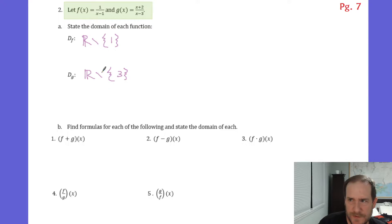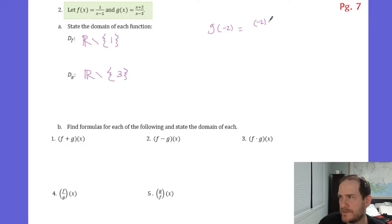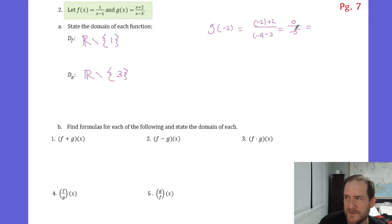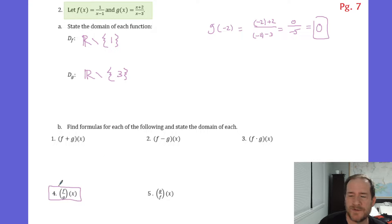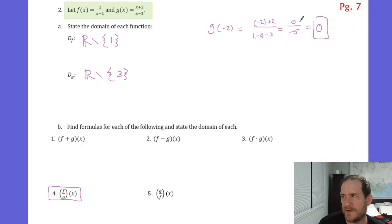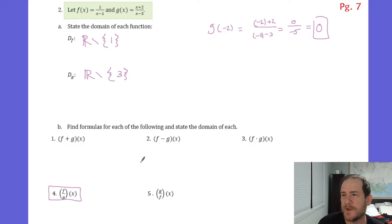Notice that negative 2 is not a problem in our domain, because g of negative 2 would be negative 2 plus 2 all over negative 2 minus 3, which is 0 over negative 5. A 0 in the numerator doesn't make us undefined — a 0 in the numerator just makes us 0. So negative 2 is a zero for function g of x, but that zero doesn't need to be restricted from our domain, unless of course you're talking about number 4, which is a quotient function where we're dividing by g, so now any x that makes g equal 0 must be removed.